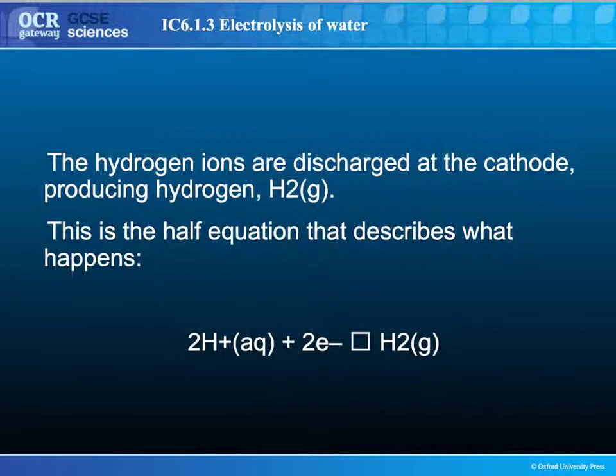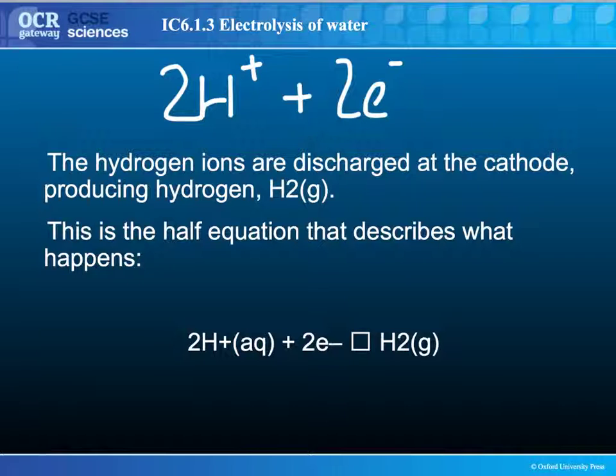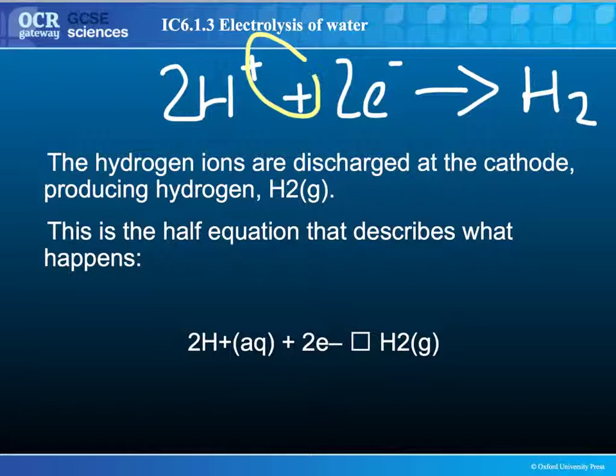So here we have the equation for the formation of hydrogen at the cathode. Essentially, what you have is two hydrogen ions, which react with two electrons at the cathode, forming hydrogen gas. The key things to remember when doing half-equations is that you must always make sure that these signs here are the same. Positive ions must gain electrons, negative ions must lose electrons.